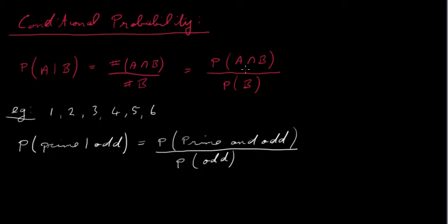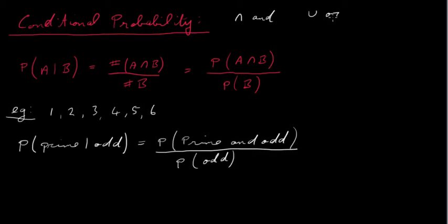If you apply the formula, A intersection B — intersection means 'and' — so it's prime and odd divided by the probability of being odd. Remember: intersection is related to the word 'and,' and union is related to the word 'or.'